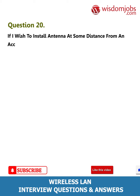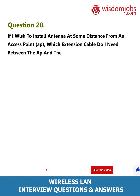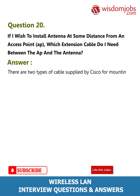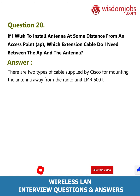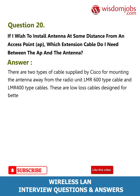Question 20: If I wish to install an antenna at some distance from an access point (AP), which extension cable do I need between the AP and the antenna? Answer: There are two types of cables supplied by Cisco for mounting the antenna away from the radio unit: LMR-600 type cable and LMR-400 type cables. These are low-loss cables designed for better efficiency.